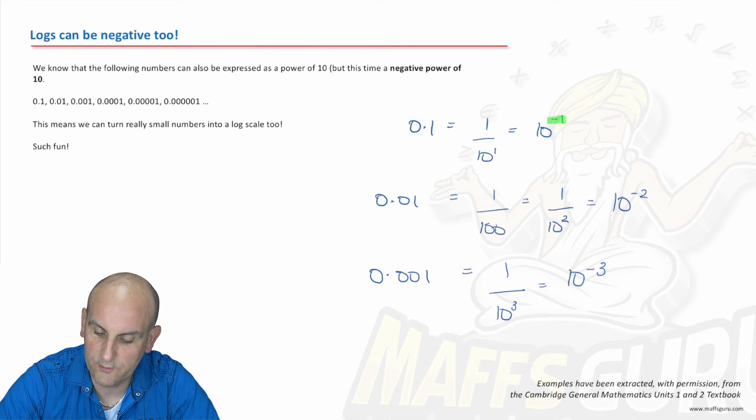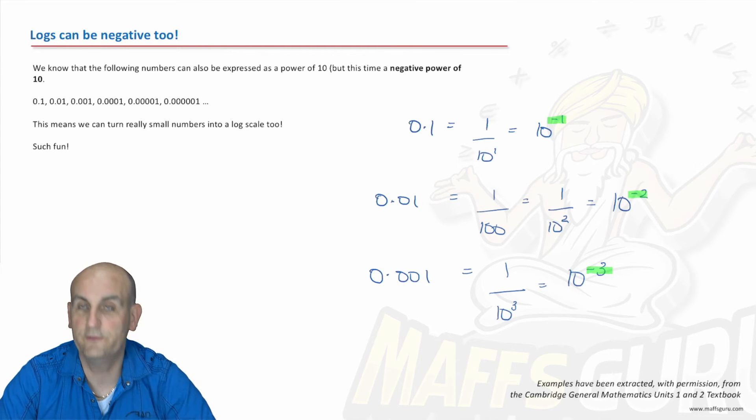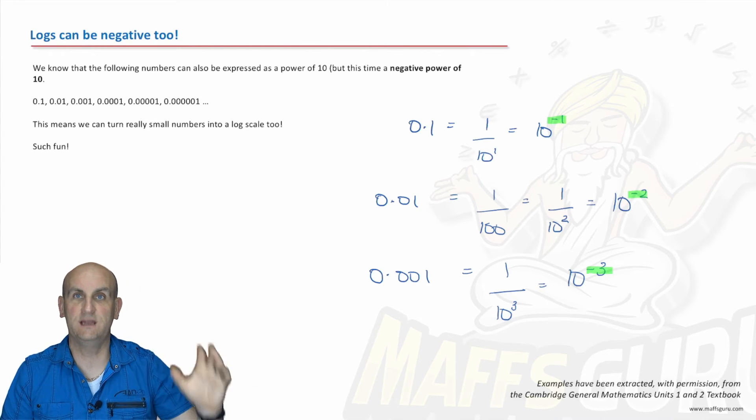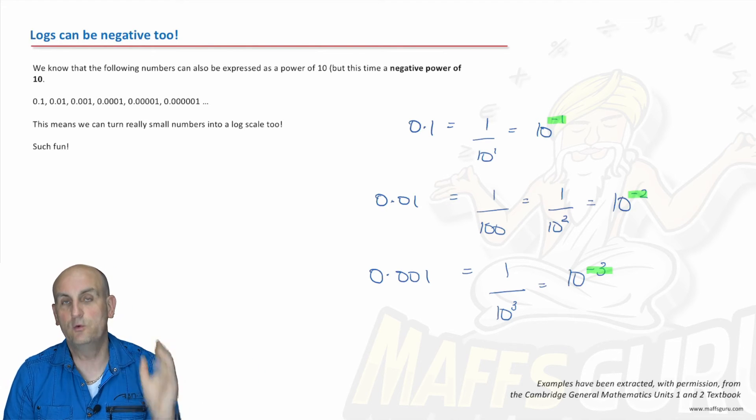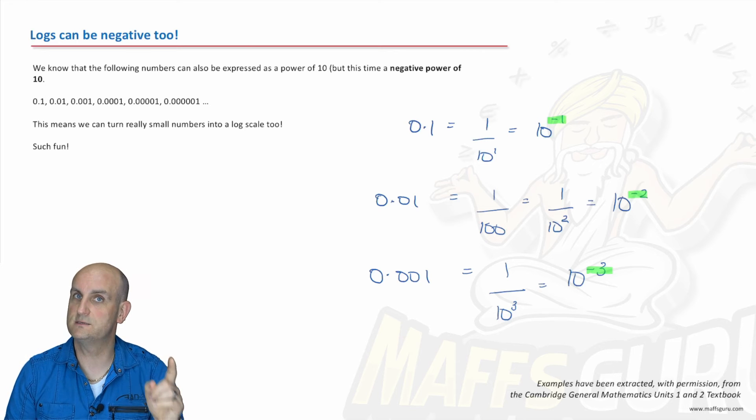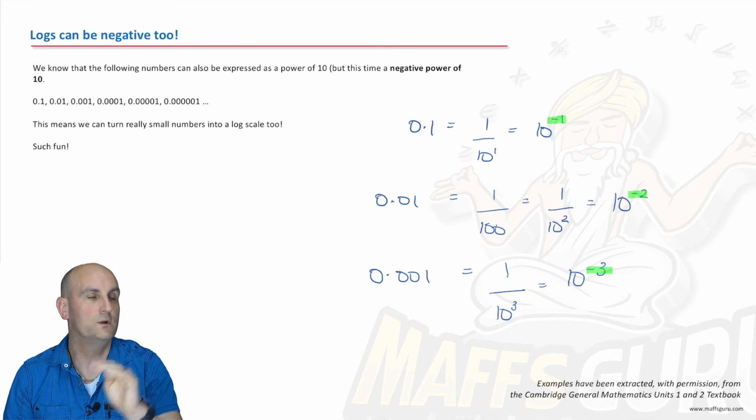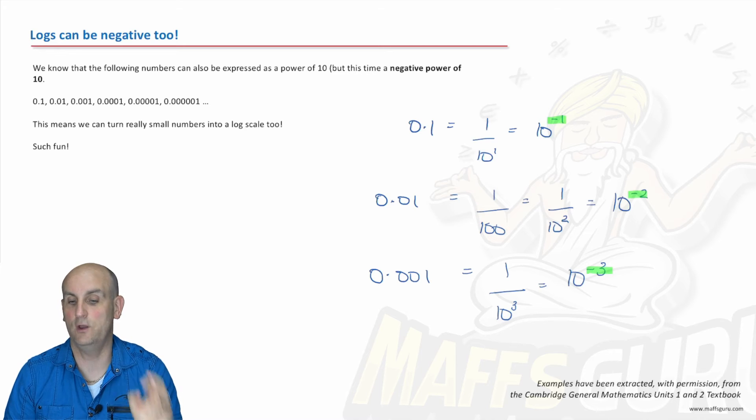And what do we notice? We now have numbers going minus 1, minus 2, and minus 3. So those really small numbers, which are getting smaller and smaller in quite a large way, believe it or not, much like our bigger numbers, can also be expressed with minus floaty powers of 10, which must mean that they can have negative logs too.